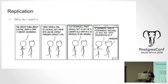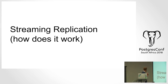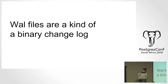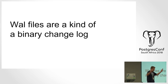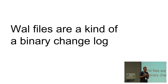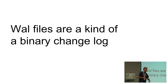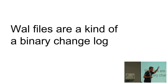We're going to cover streaming replication and WAL files. When Postgres works with data it loads it into shared memory — there are pages, and whenever you update something it writes into those pages, but it first writes a binary diff into the WAL file, commits that, and makes sure it's on disk. It doesn't continually write to the main data file.